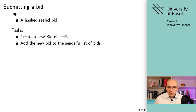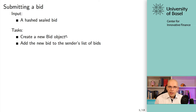Our tasks are: number one, create a new bid object; and number two, add the new bid to the sender's list of bids. A sender can potentially have several bids, so we will use an array here — an array of structs — and we have to add it to that array for a specific address.